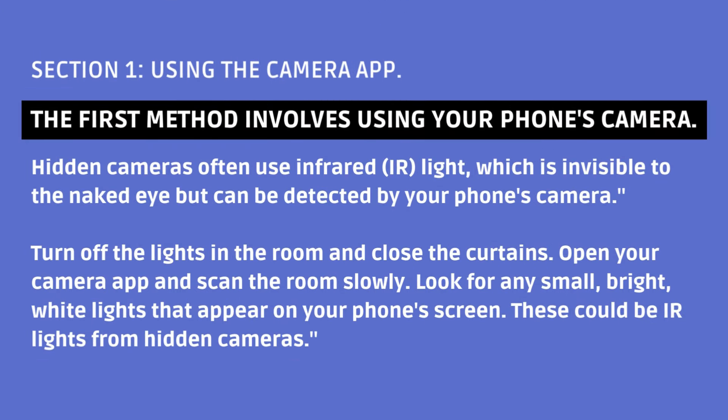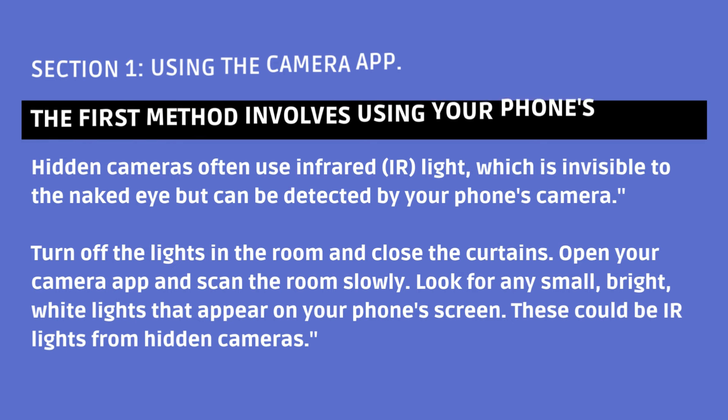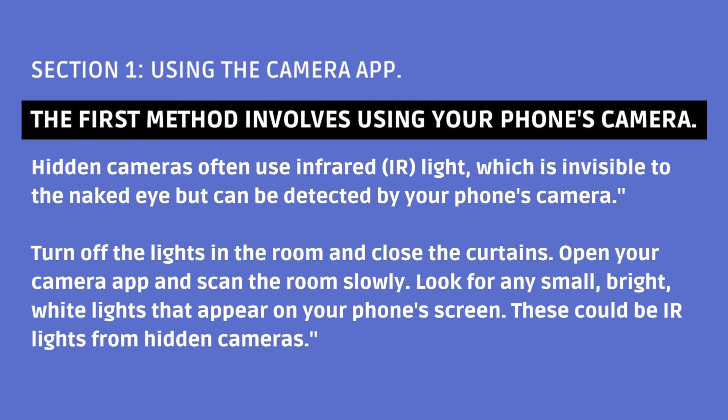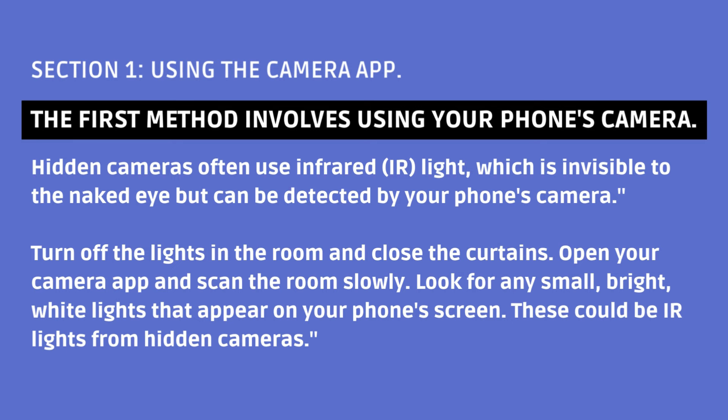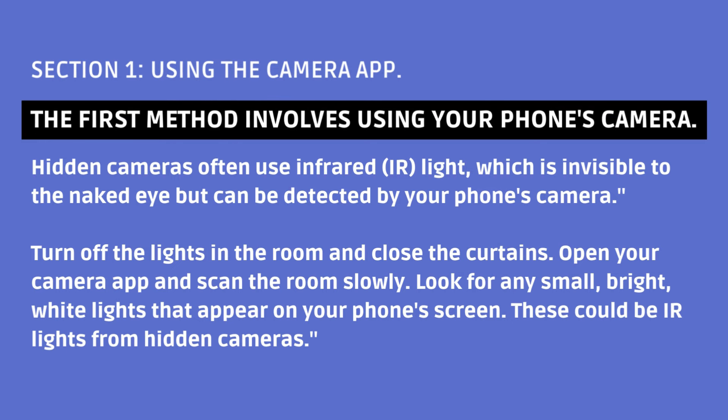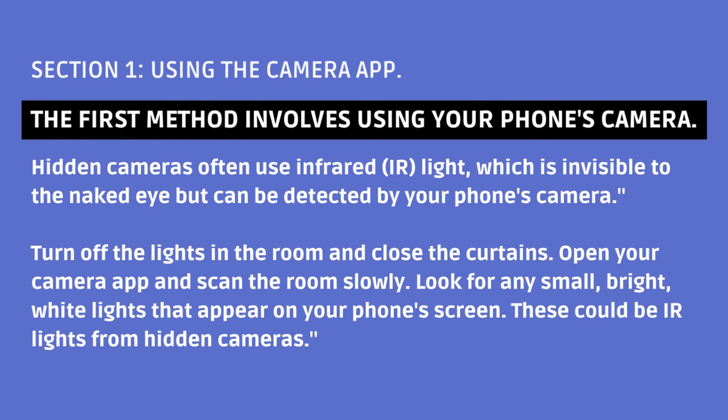Section 1: Using the Camera App. The first method involves using your phone's camera. Hidden cameras often use infrared IR light, which is invisible to the naked eye but can be detected by your phone's camera. Turn off the lights in the room and close the curtains. Open your camera app and scan the room slowly. Look for any small, bright, white lights that appear on your phone's screen — these could be IR lights from hidden cameras.